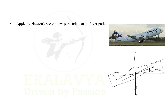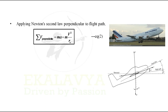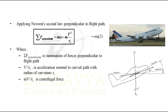In a similar manner, applying Newton's second law perpendicular to the flight path, we get the summation of forces perpendicular to the flight path equal to mass into acceleration. Acceleration perpendicular to the flight path is centrifugal acceleration, expressed as mass into V² divided by radius of curvature. Let us denote this as equation 2, where summation of F perpendicular is the summation of forces perpendicular to the flight path, V²/rc is acceleration normal to the curved path with radius of curvature rc, and mV²/rc is the centrifugal force.